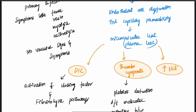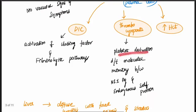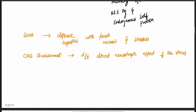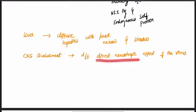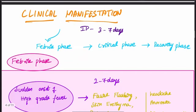Plasma leakage increases RBC mass, thereby increasing hematocrit. Due to DIC, there is activation of clotting factors and fibrinolytic pathways. Thrombocytopenia occurs due to platelet destruction caused by molecular mimicry between the NS1 antigen of Dengue and endogenous self-proteins. In the liver, there is diffuse hepatitis with focal necrosis and steatosis. There is also CNS involvement due to the direct neurotrophic effect of the virus.